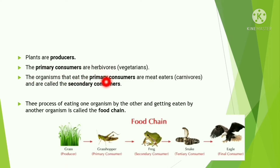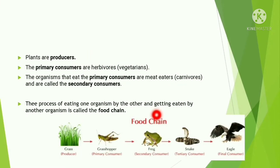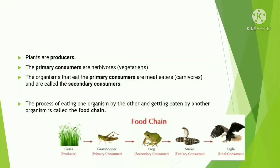Primary consumers are the herbivores because they eat only producers — that means they eat only plants. Secondary consumers eat the primary consumers for energy — that means animals who eat herbivores are the secondary consumers. The carnivores, also known as meat eaters, eat the primary consumers and that is why they are known as secondary consumers.